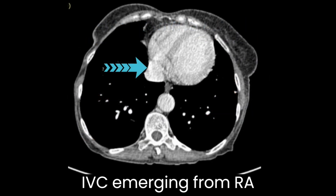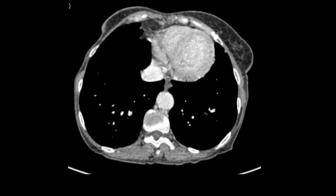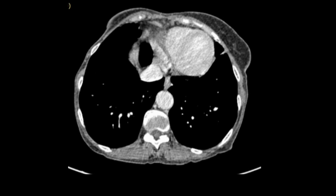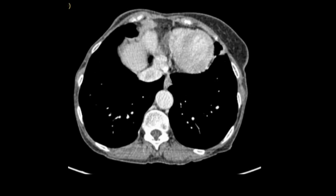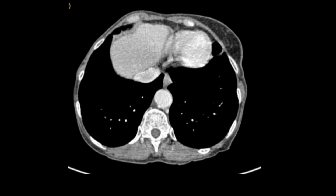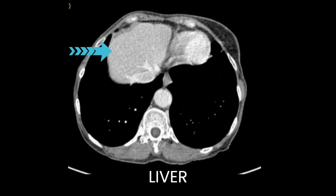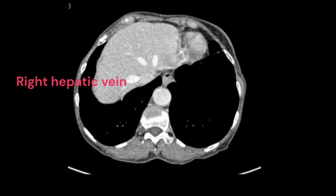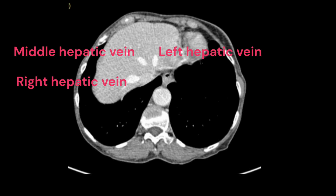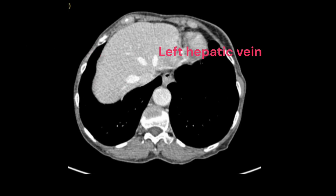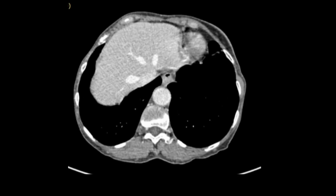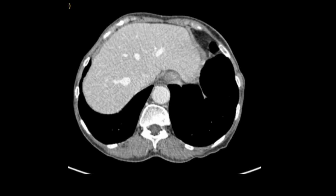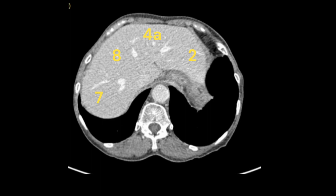On CT, we can see the IVC emerging from the right atrium. Trace the IVC downwards to see the convergence of the three hepatic veins. After the diaphragm ends, as we move down, we can see the right hepatic vein, middle hepatic vein, and left hepatic vein draining into the IVC. We trace along the middle hepatic vein to divide the liver into right and left.